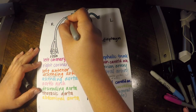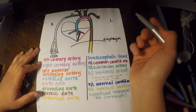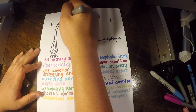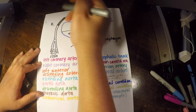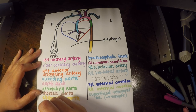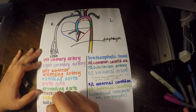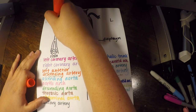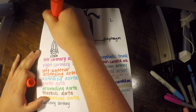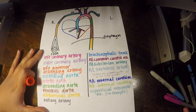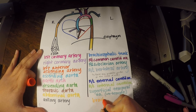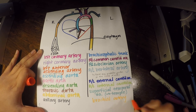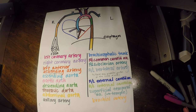This is our right subclavian artery. We're going to have our axillary artery right here, and that's going to turn into something called our brachial artery, which is in our arm. That makes sense because brachial, or brachium, means arm — another term we reviewed at the beginning of the semester.